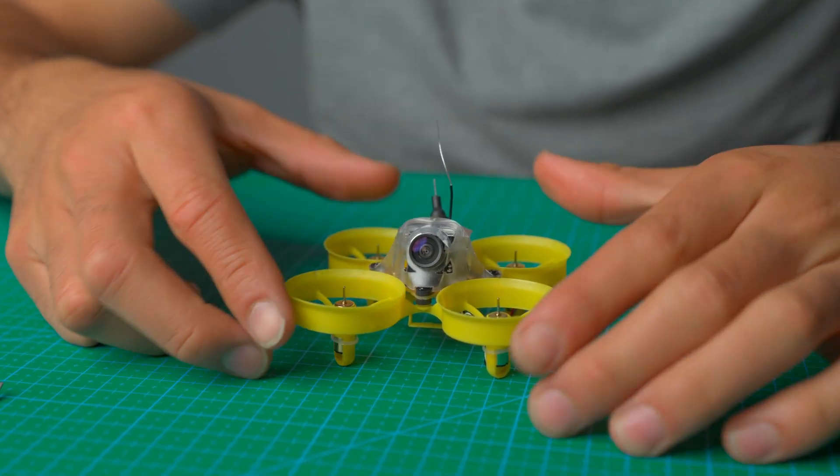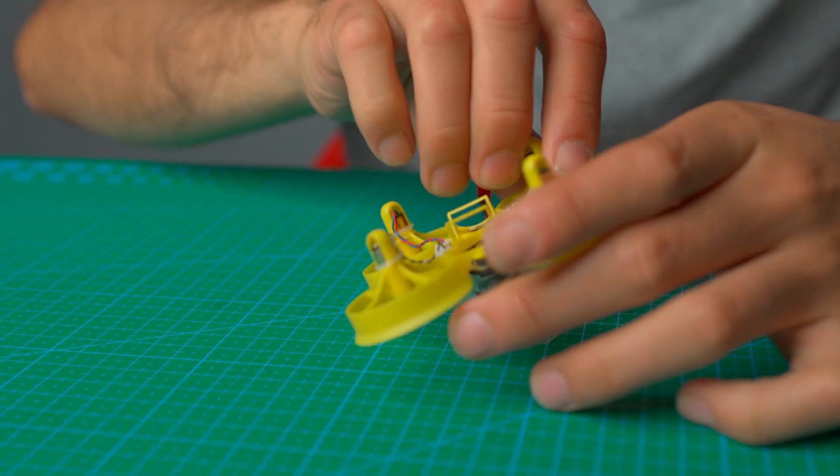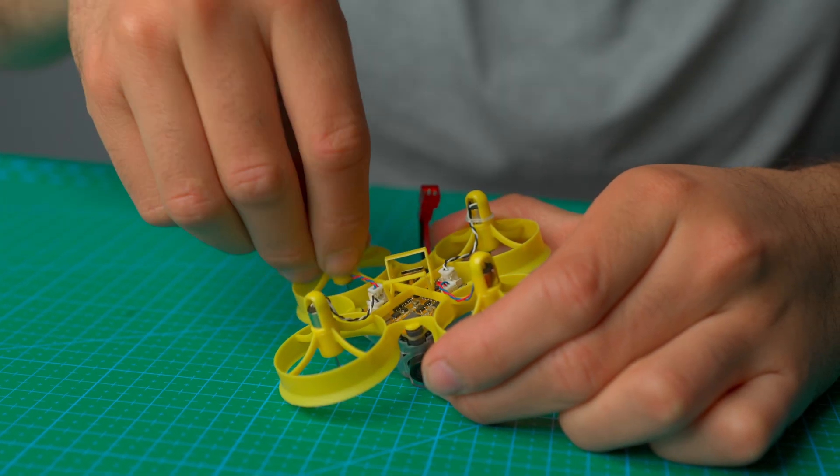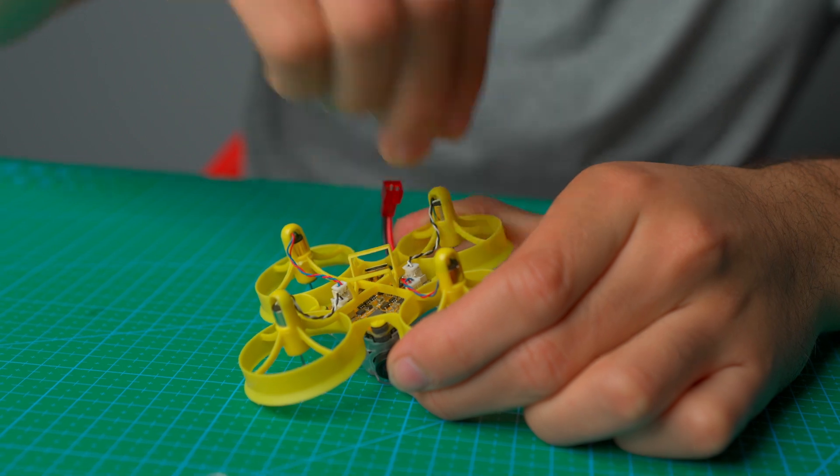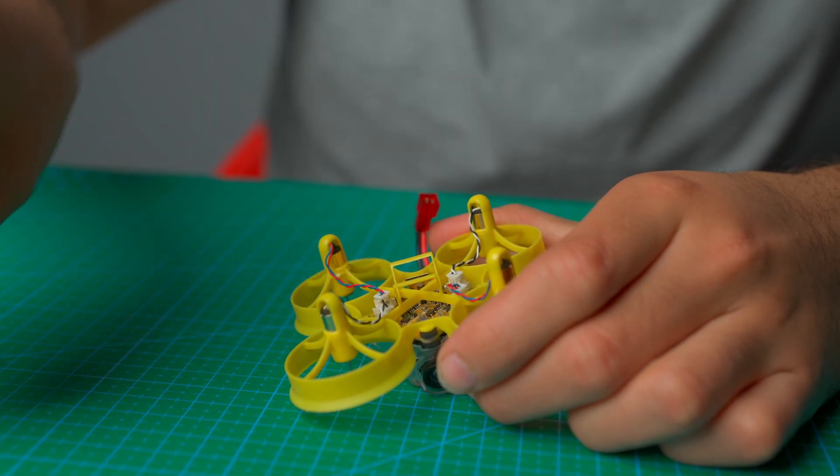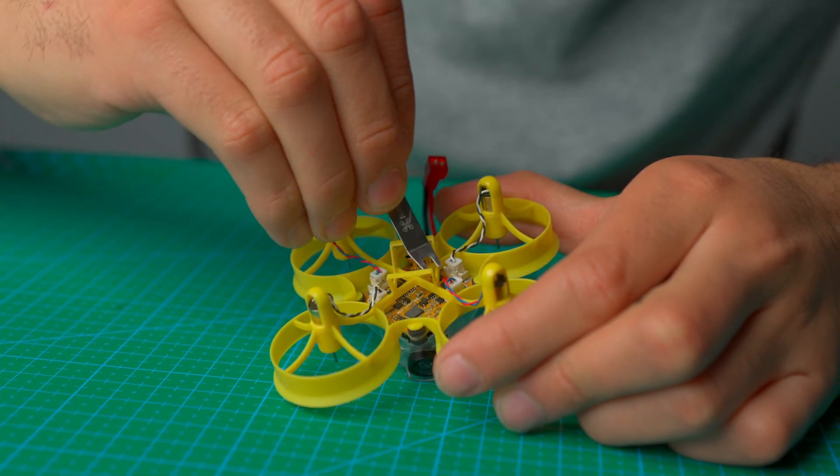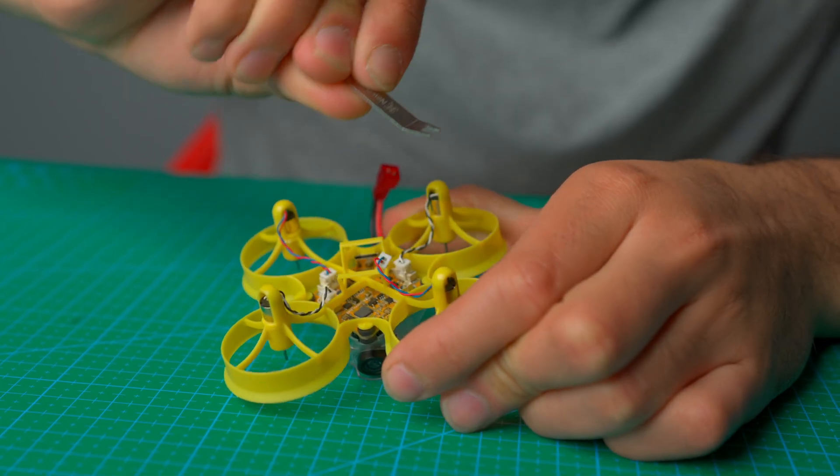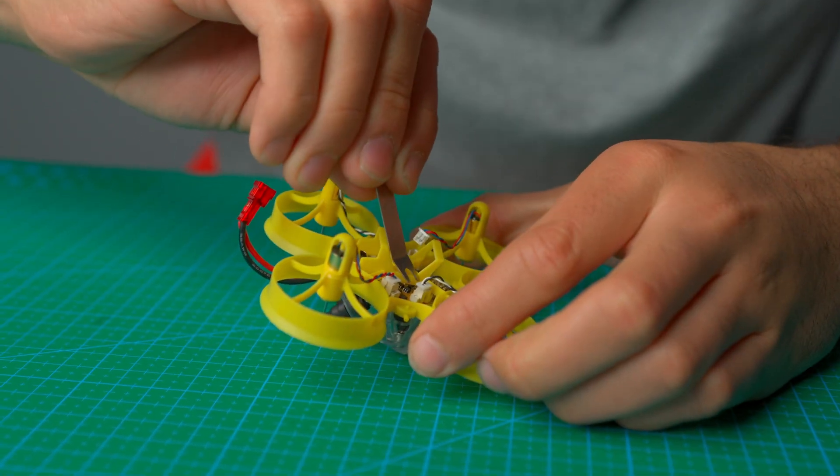So now, after we have removed the props, now we're going to go ahead and grab the drone, flip it over, remove these rubber bands or O-rings, whatever you want to call them. And that keeps our wires safe from going into the props. And then, with the same prop tool that we used to remove the props, now we're going to go ahead and remove the motor plugs. Go side to side. It should come off. And do that with all four.